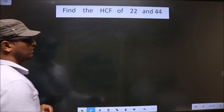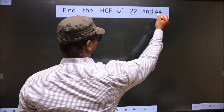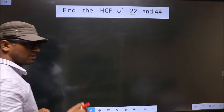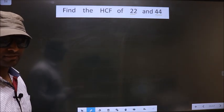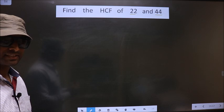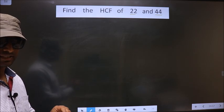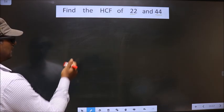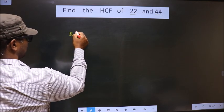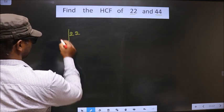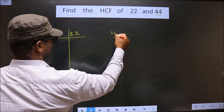Find the HCF of 22 and 44. To find the HCF, first we should do prime factorization of each number separately. That is 22 and 44.